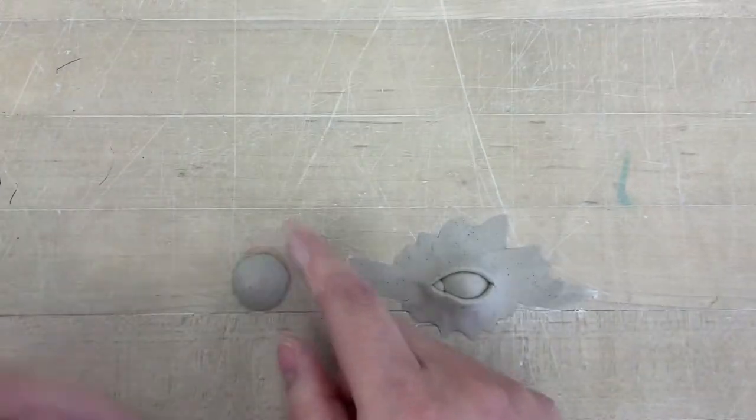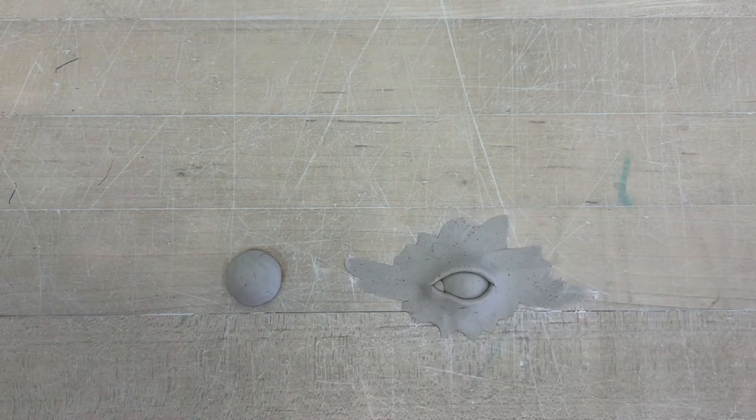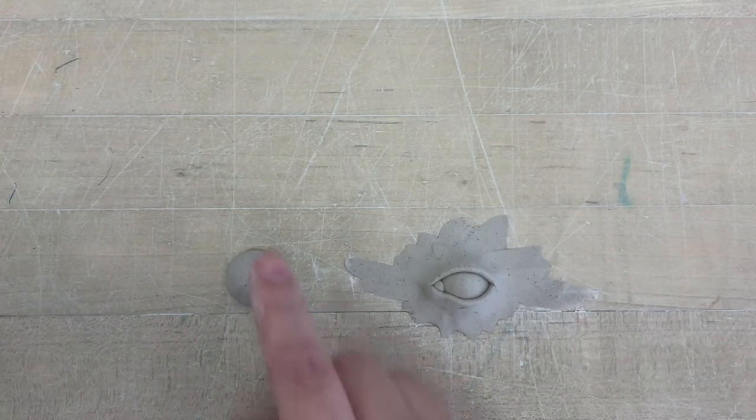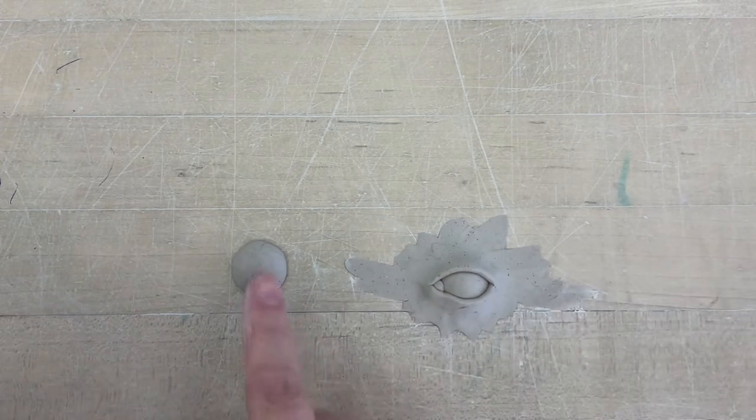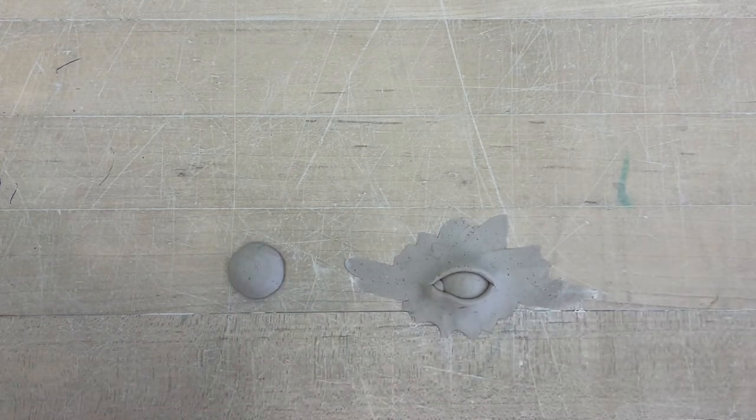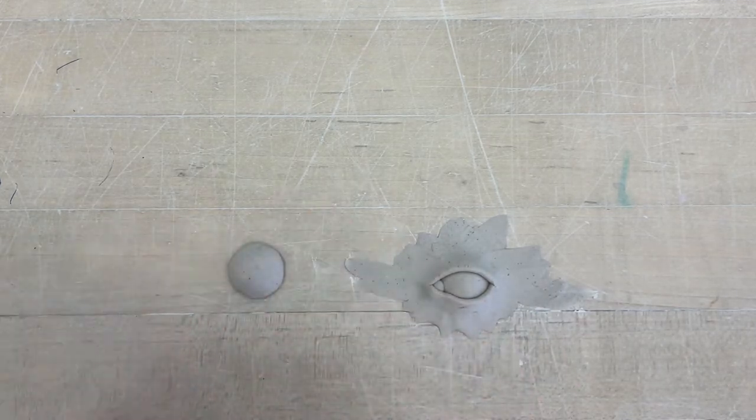We're going to practice on the table, and then you would do this on your actual mug once you've practiced. If you were adding it onto your actual project, you would need to slip and score this part on. But if you're just practicing on the table, you can just stick it and it'll be fine.